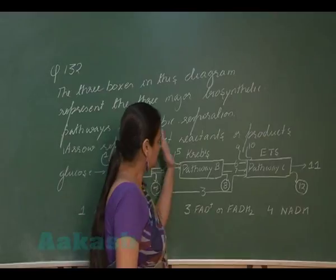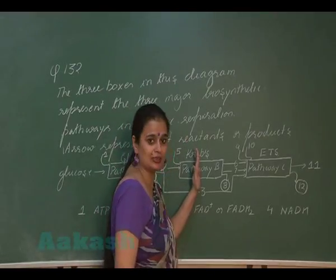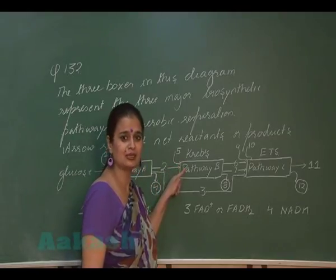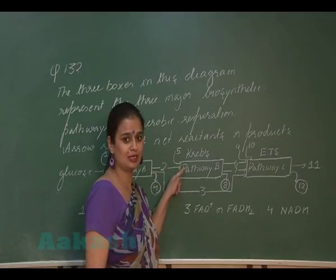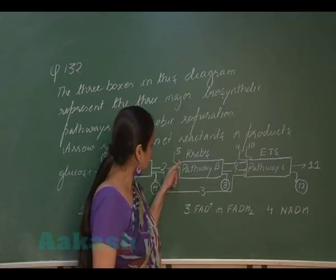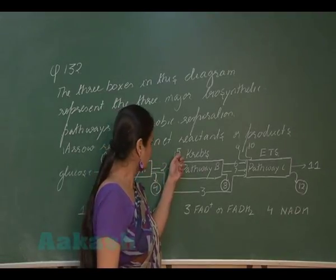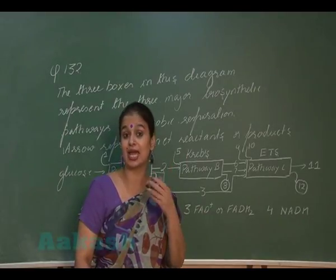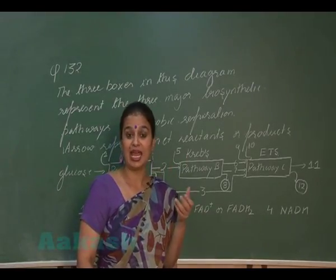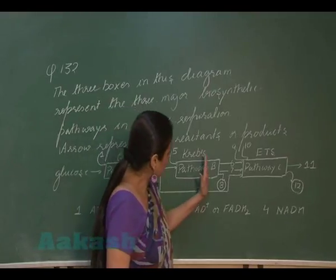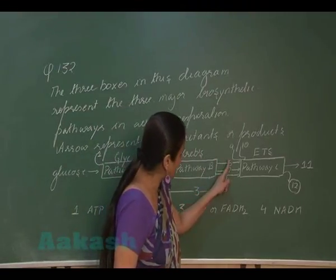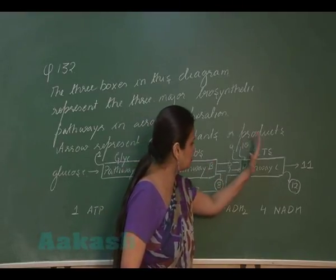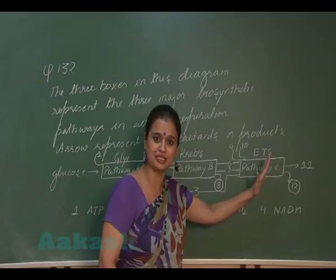Then the Krebs cycle will occur. In the Krebs cycle, there is utilization of NAD+, FAD+, or coenzyme A. So the 5th reactant entering the Krebs cycle can be coenzyme A, FAD+, or NAD+. This results in the formation of NADH and FADH, which will again enter the electron transport system for oxidation.